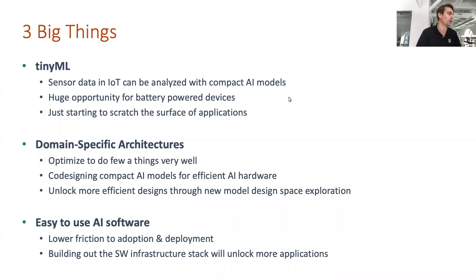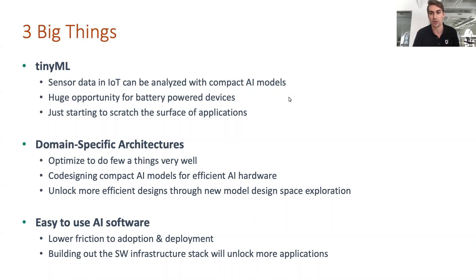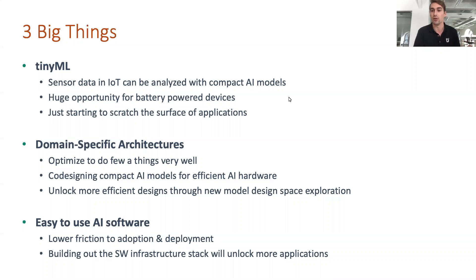Lastly, easy-to-use AI software is really about lowering the friction to adoption. If you ask why more intelligent applications aren't deployed, the bottom line is that it's still pretty difficult for a lot of these applications. We really want to talk about how we can make this more possible.